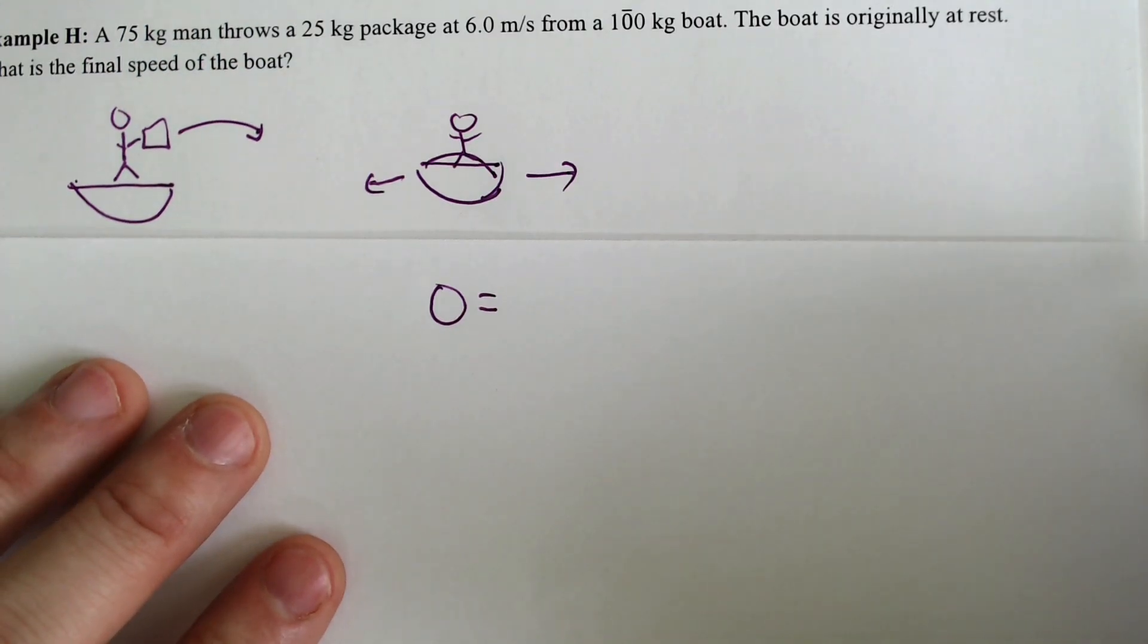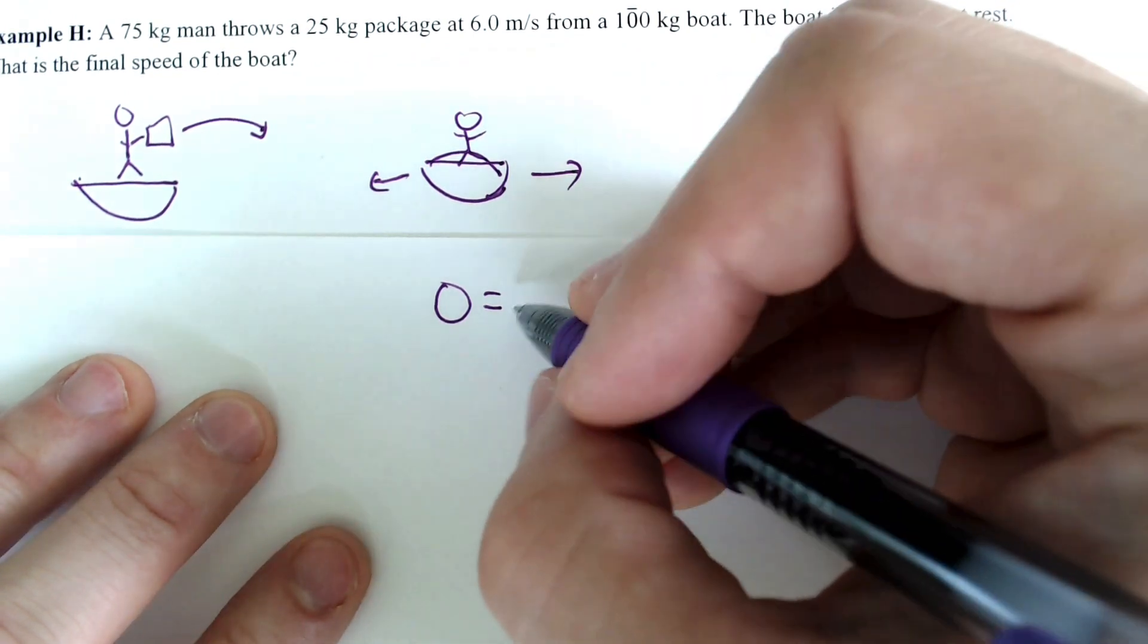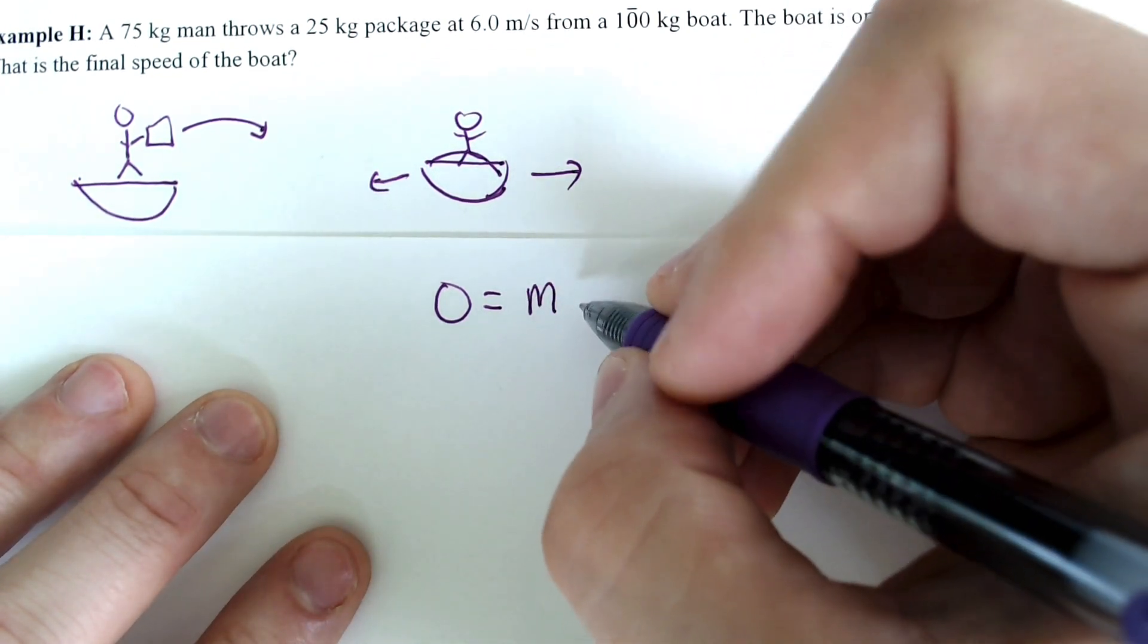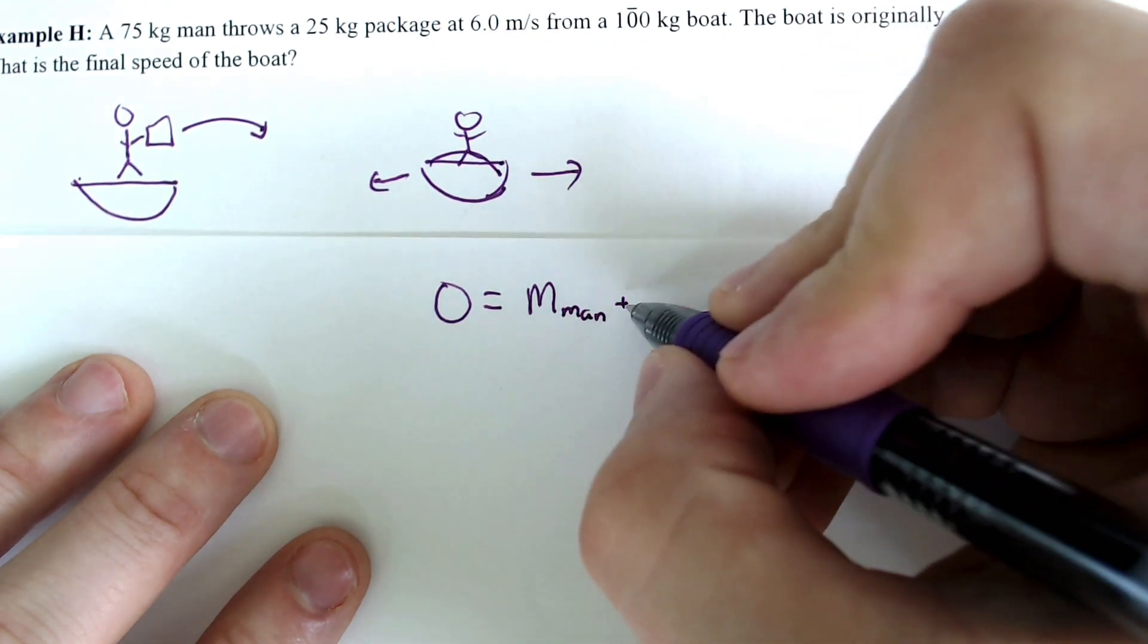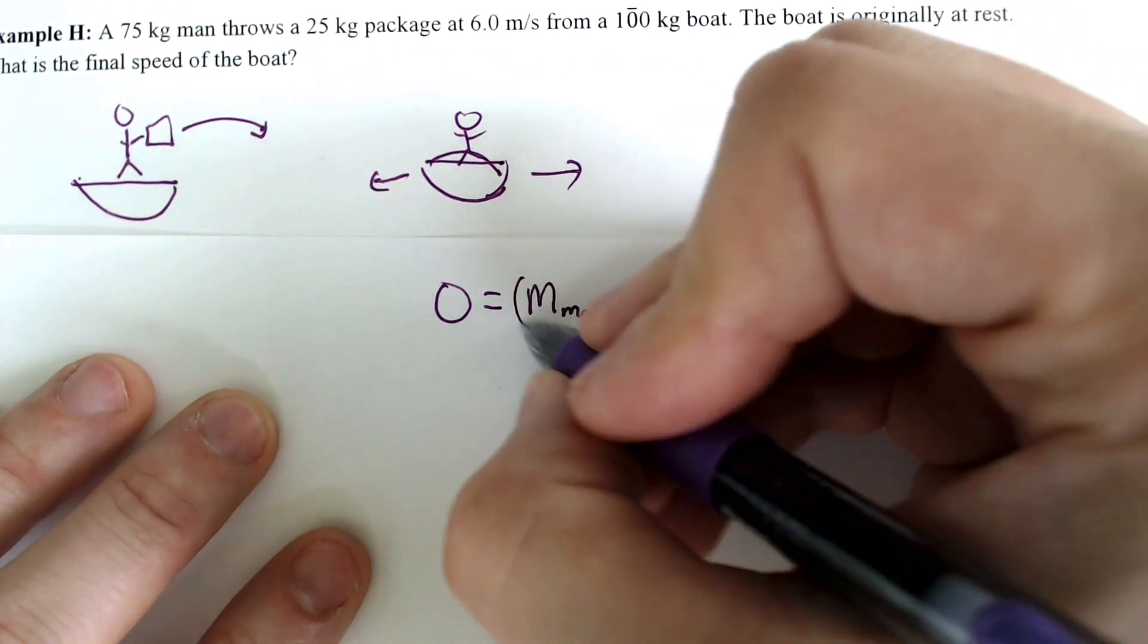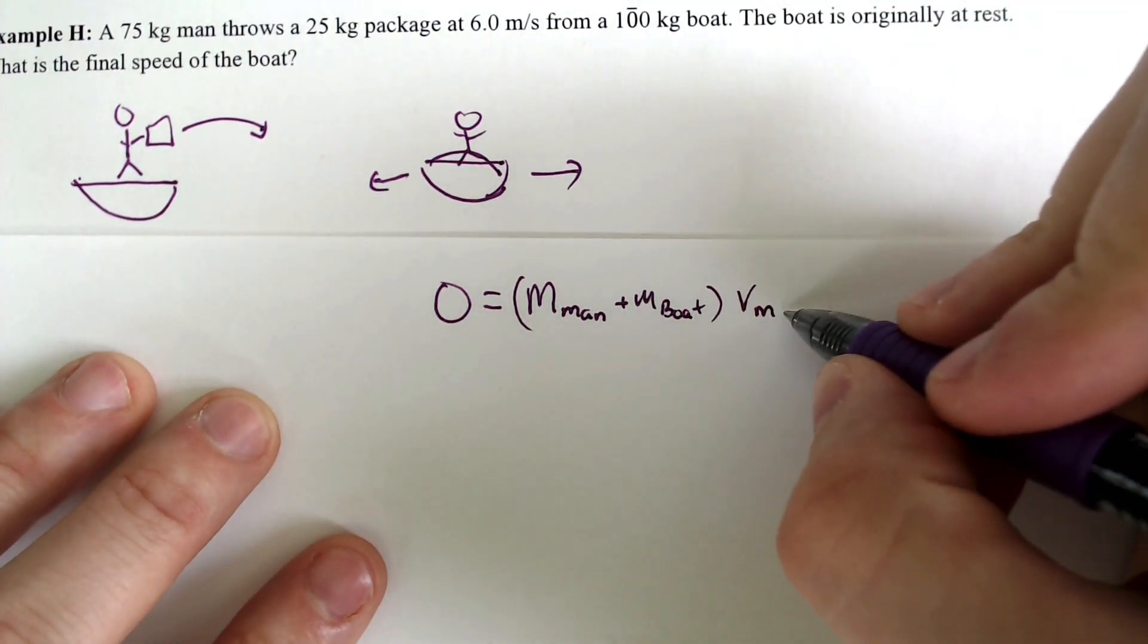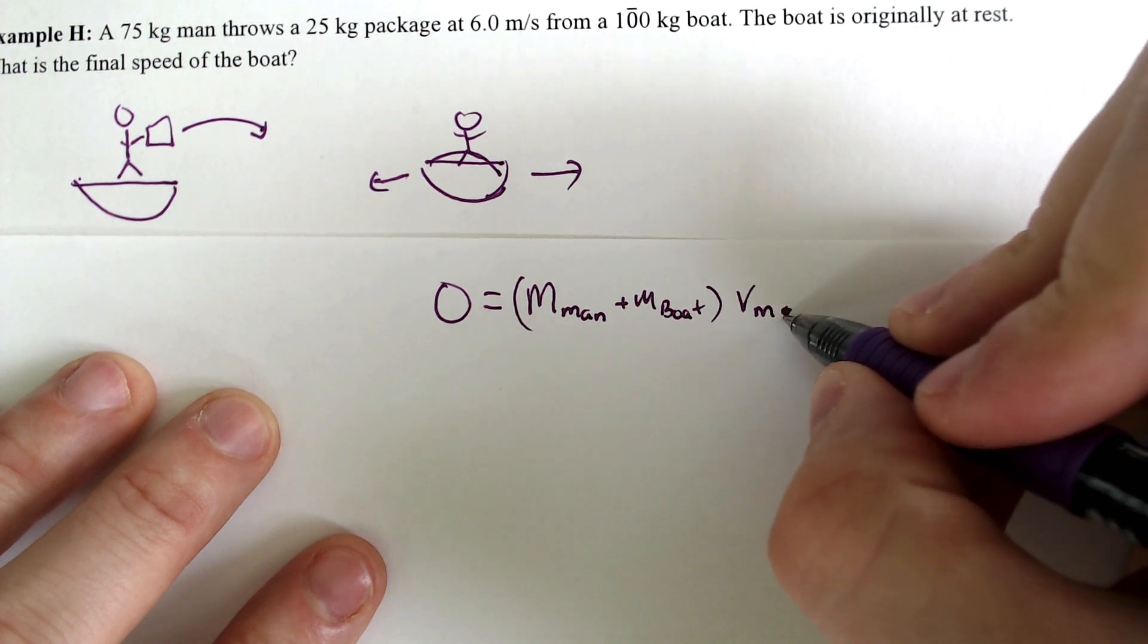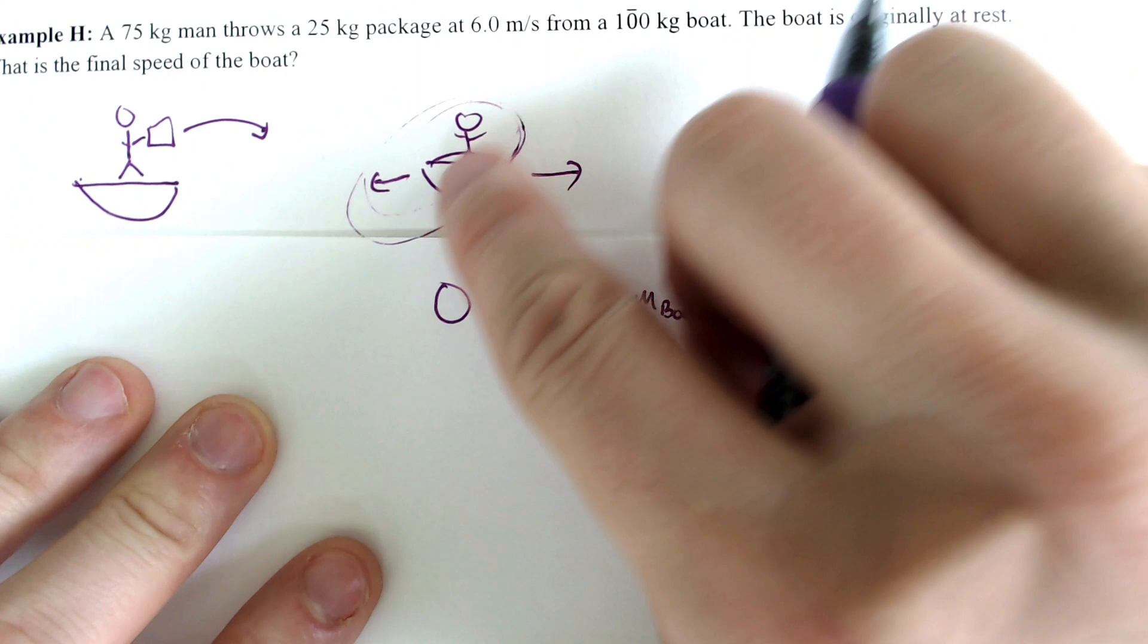and that zero would be the mass of the man plus the mass of the boat times their velocity of the man and the boat when it's going backwards.